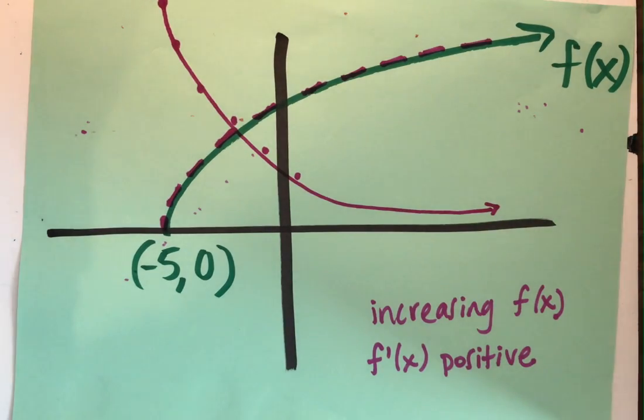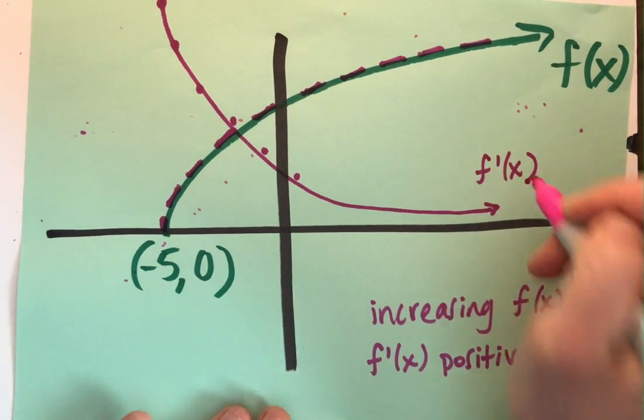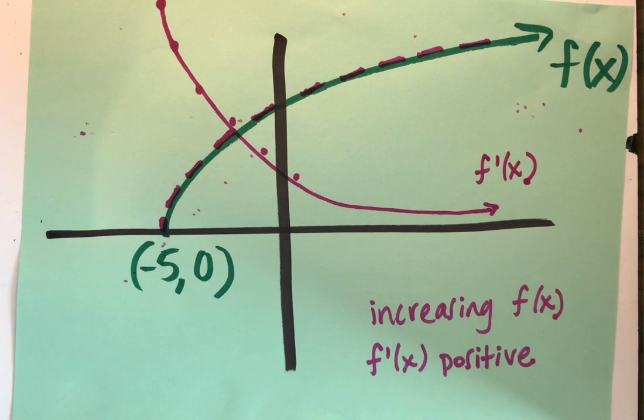So given some sort of radical function that's always increasing, my derivative is always positive, but getting smaller and smaller and smaller.